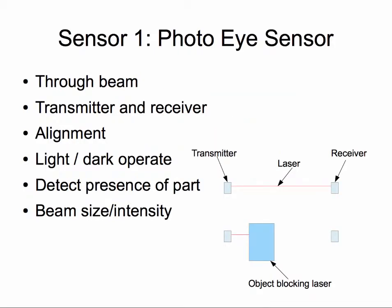The first sensor is the photo-eye sensor. In this case it is a through beam and there is a transmitter and a receiver. They need to be aligned so that the laser from the transmitter is properly detected by the receiver. If there is a lot of distance between the two, be cautious of vibrations in the environment.